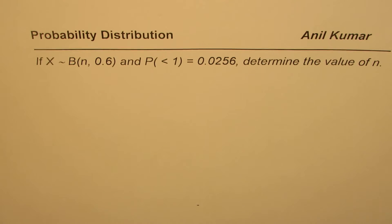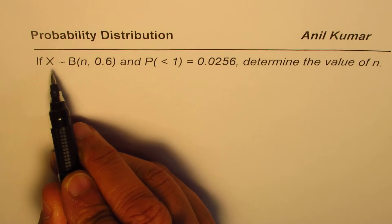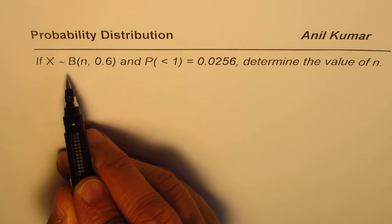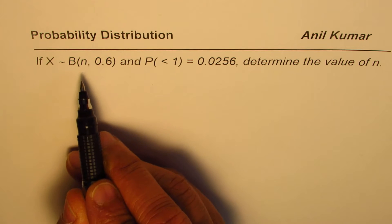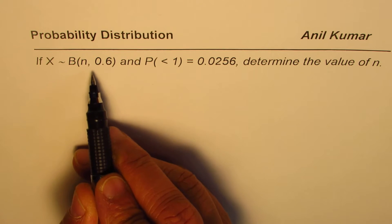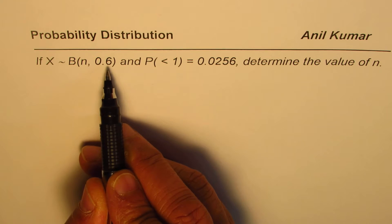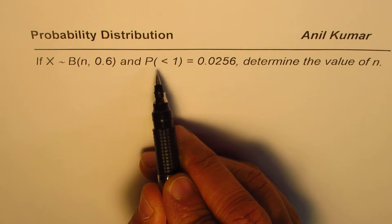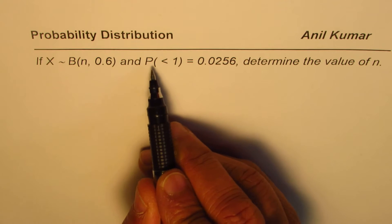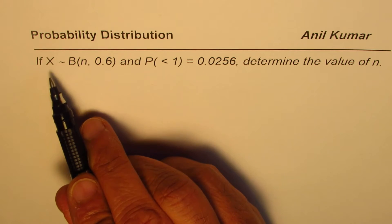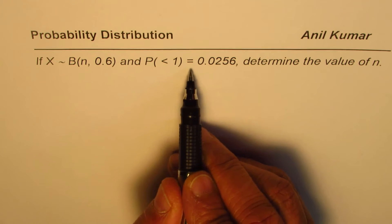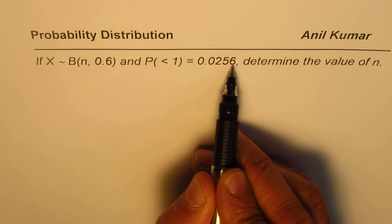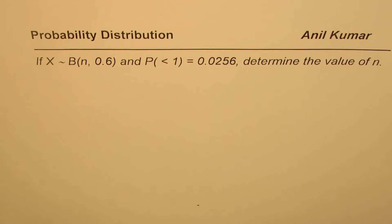The question here is: if random variable X follows a binomial distribution where n is the number of trials and the probability of success is 0.6, and the probability for X less than 1 is given as 0.0256, determine the value of n.